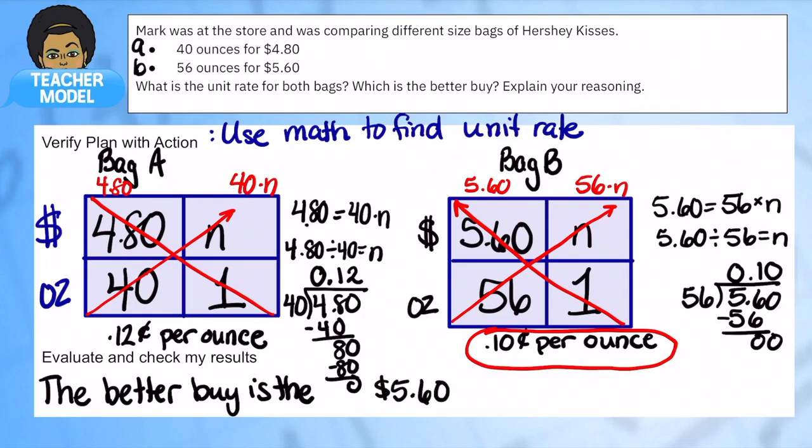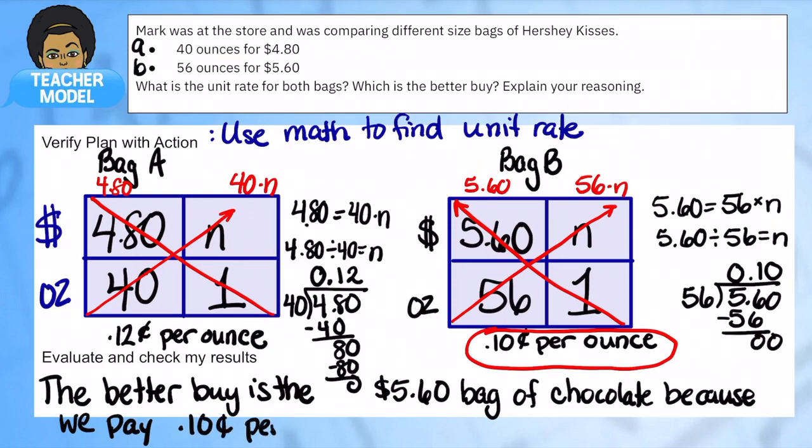I'm going to put this into the notes. The better buy is the $5.60 bag because we pay 10 cents per ounce instead of 12 cents per ounce.